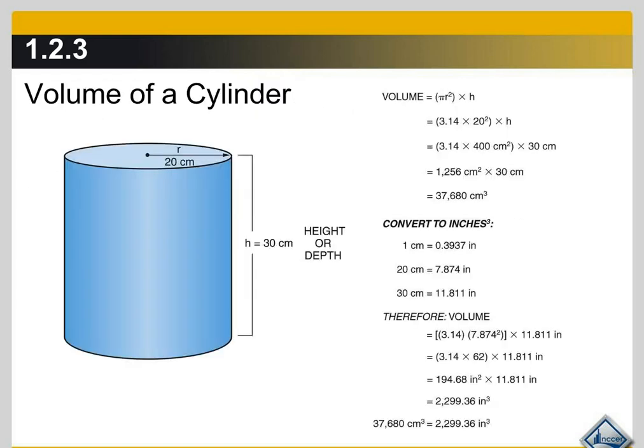Okay, so the volume of the cylinder—it's the same calculation as the area of the circle. So you take π, which is 3.14, times the radius from the center of the circle to the outer edge of that circle, and you square the radius, which means you multiply the radius times itself.